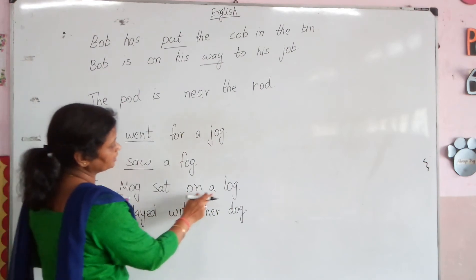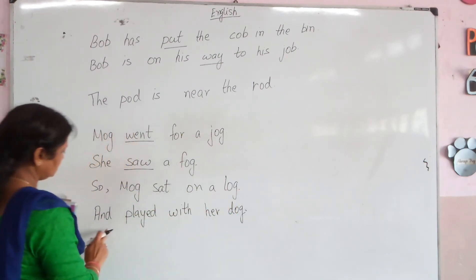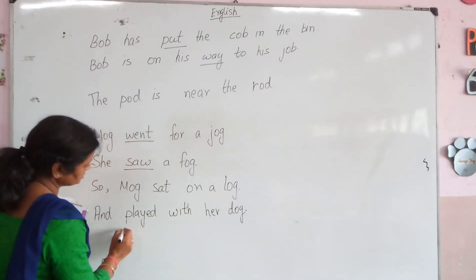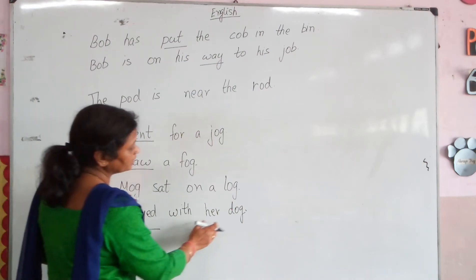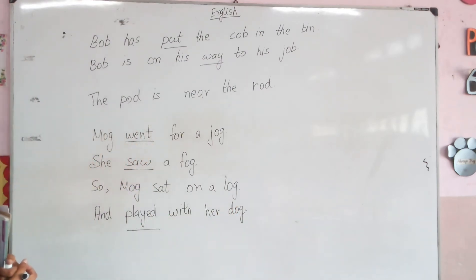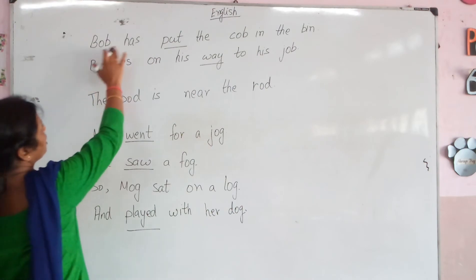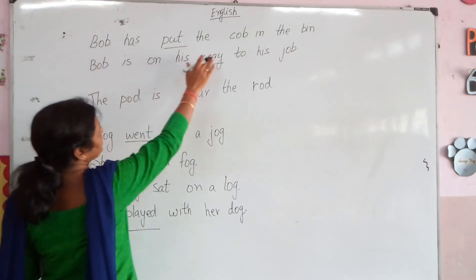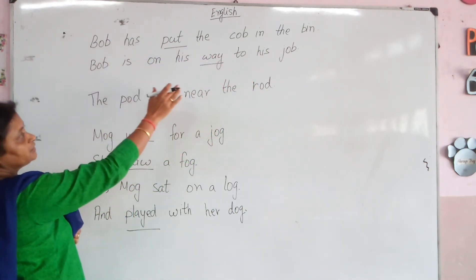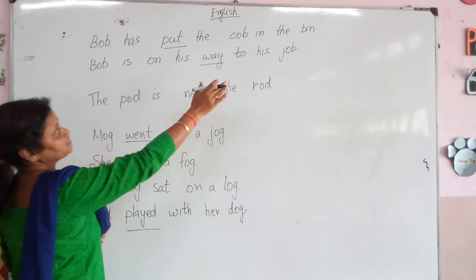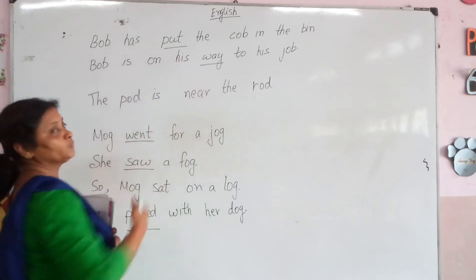Bob sat on a log and played with a dog. Again reviewing: Bob has put the cob in the bin. Bob is on his way to his job.